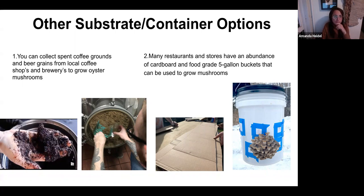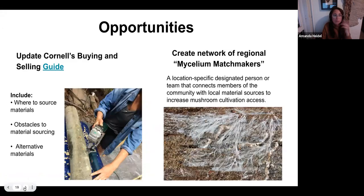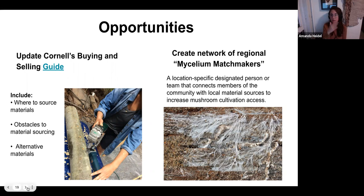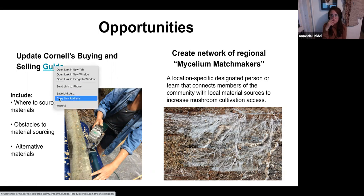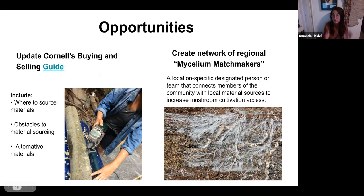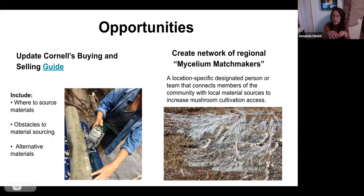Two opportunities we identified: first, updating Cornell's buying and selling guide to include tree ID images, guides for different substrates, and urban ag considerations. Second, creating a network of regional mycelium matchmakers — a location-specific person or team that connects people to local supply chains. You call them and say 'I'm trying to find wood chips' and they match you with a source. It's like a hub connecting people to local suppliers where they can find their materials.